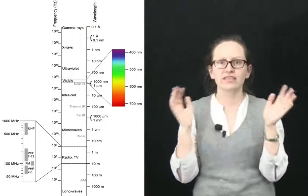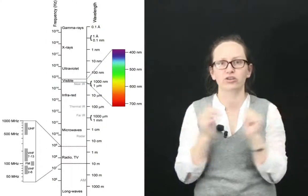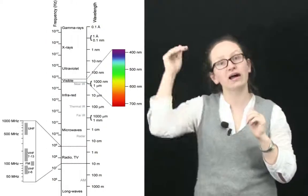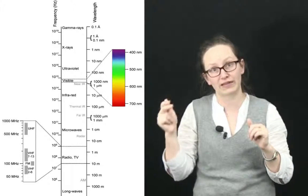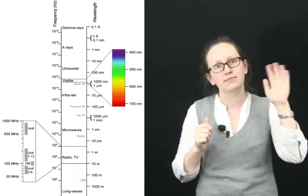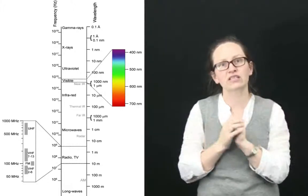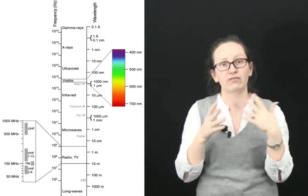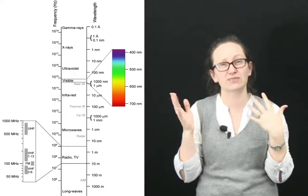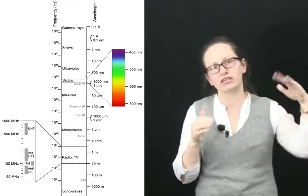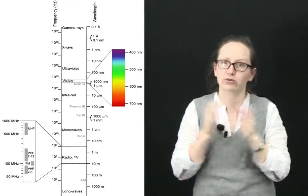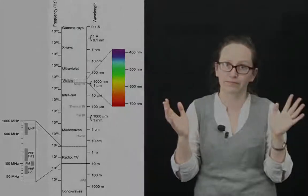This image shows you the different parts of the electromagnetic spectrum. Speed cameras use a wavelength of about three centimetres, so this falls just into the radio wavelength.